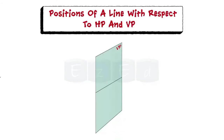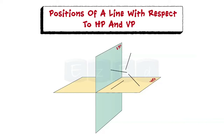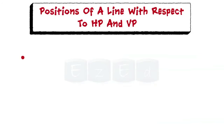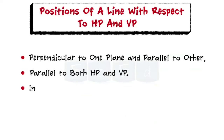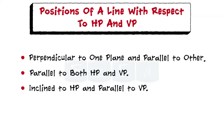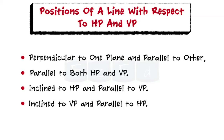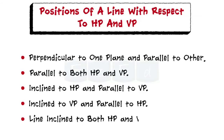Let us see the positions of a line with respect to HP and VP. A line may occupy an infinite number of positions in space with respect to HP and VP. The various positions may be classified into the following types: perpendicular to one plane and parallel to the other; parallel to both HP and VP; inclined to HP and parallel to VP; inclined to VP and parallel to HP; and a line inclined to both HP and VP.